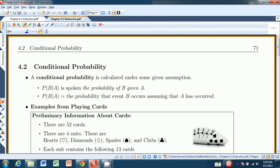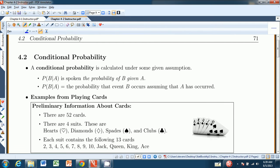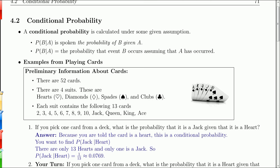Hello and welcome to Chapter 4.2 from the Introduction to Statistics Think and Do book. This chapter is on conditional probability. A conditional probability is a probability that is calculated under some given assumption. Here's the notation: the probability of B given A. It's the probability that B occurs, assuming that A has occurred.